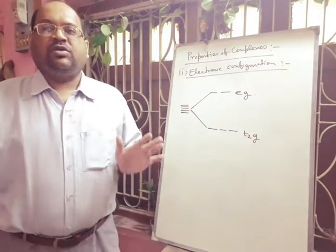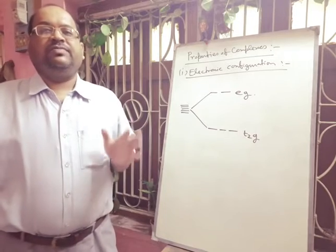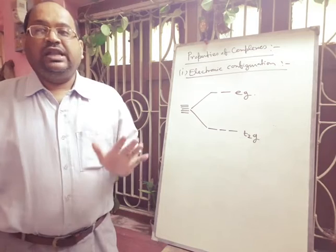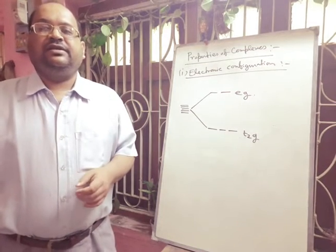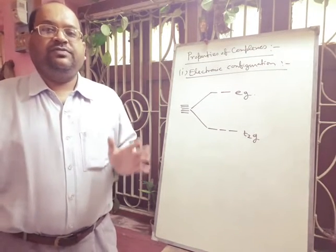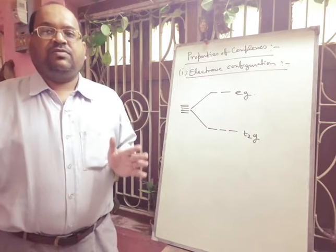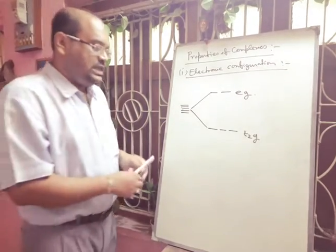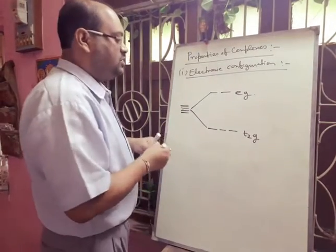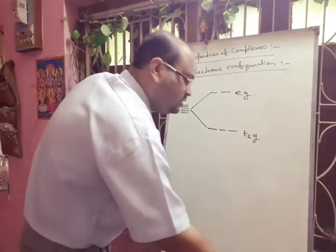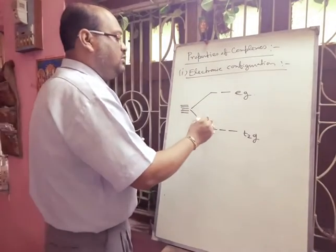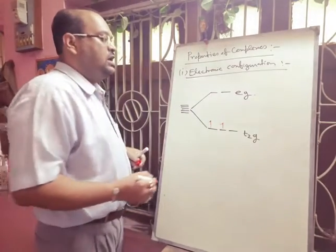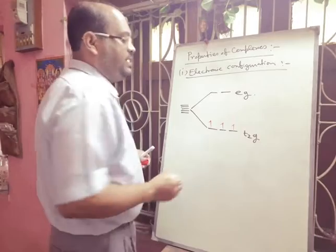electrons occupy a set of orbitals of the same energy one at a time with parallel spin, and get paired up only after each orbital is singly filled. If we think about complexes having up to three d electrons, there is no pairing. For d1, one electron fills; for d2, two electrons are singly occupied in parallel — they will not pair up.